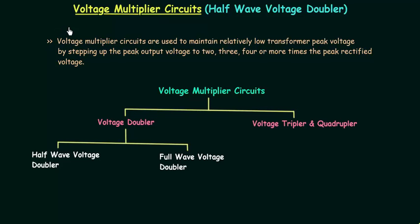From this lecture I will start voltage multiplier circuits. There are different voltage multiplier circuits available and we have to study them one by one. The first question that comes in our mind is the use of voltage multiplier circuits. Voltage multiplier circuits are used to maintain relatively low transformer peak voltage by stepping up the peak output voltage to 2, 3, 4 or more times the peak rectified voltage.